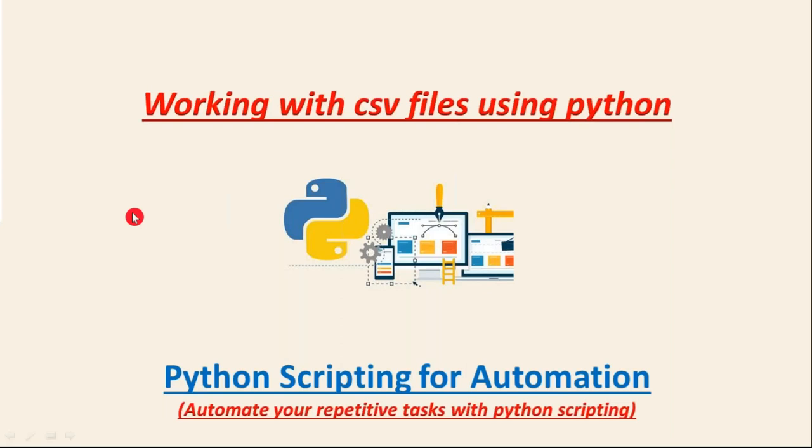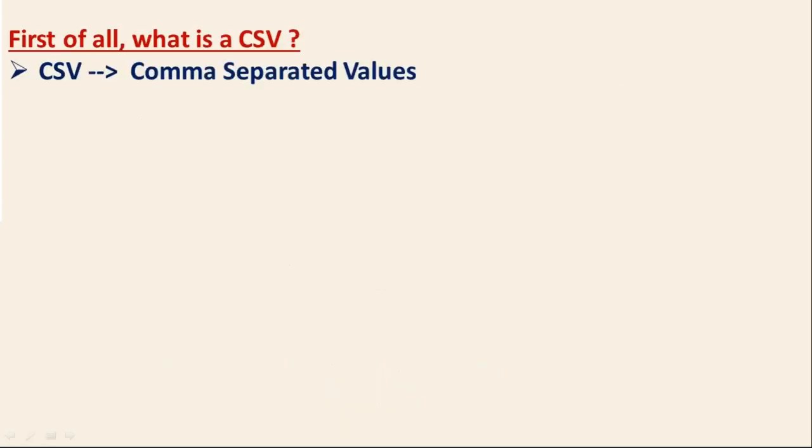Here we are going to work with CSV files using Python. First of all, what is CSV? Simply, CSV stands for comma-separated values. That means whatever values you have in a CSV file, they are all separated by a comma — the separator or delimiter is a comma. Separator and delimiter mean the same thing.